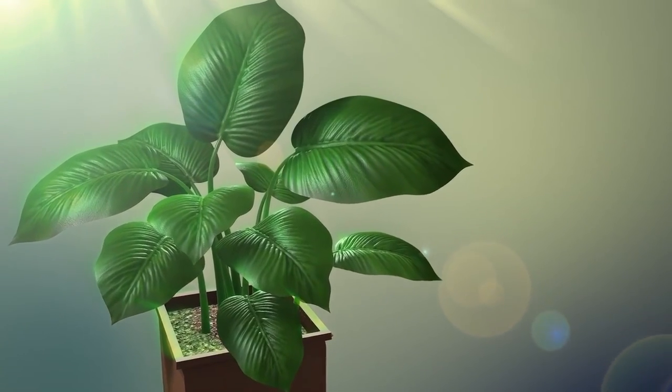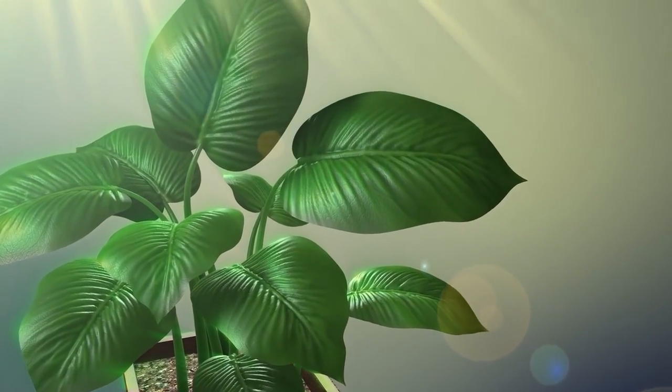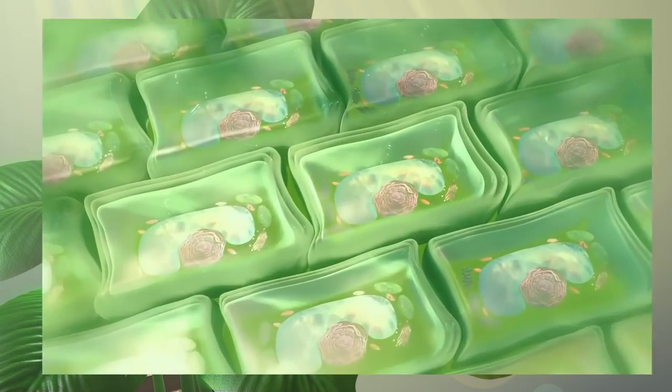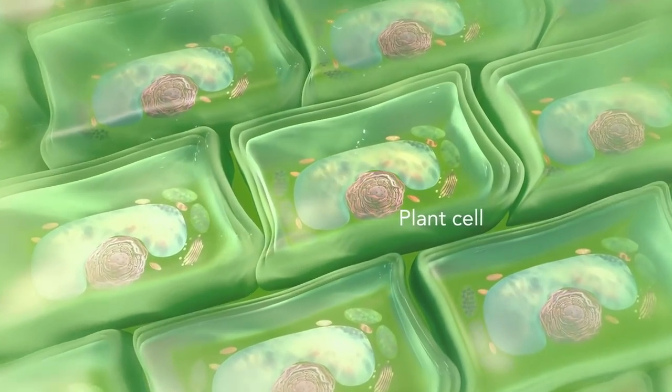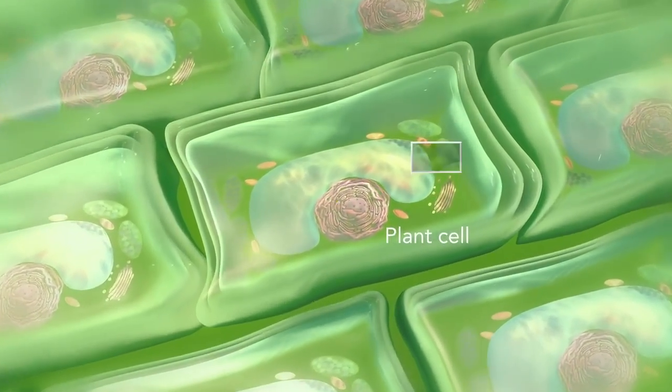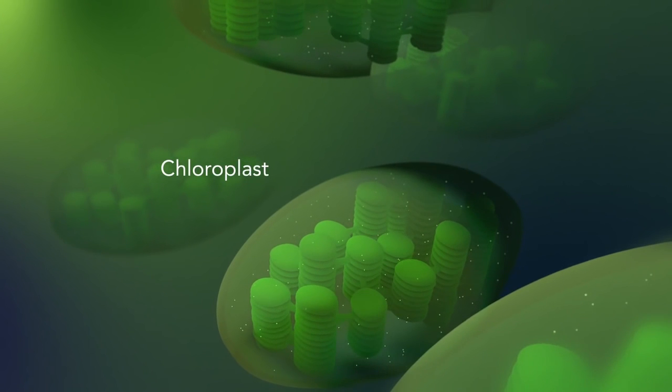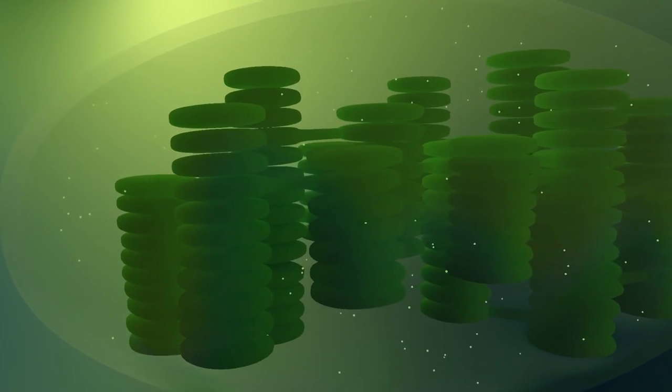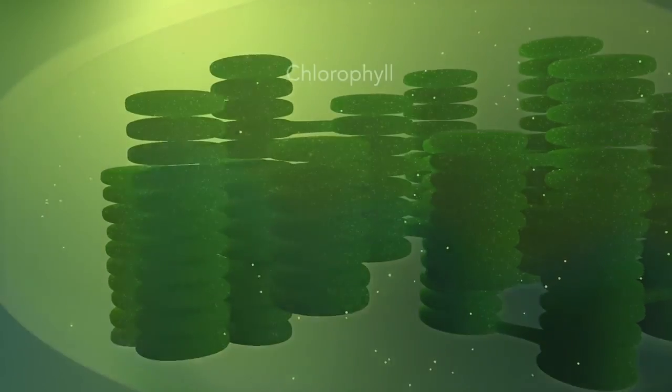Some organisms, such as plants that are photo-autotrophic, meaning they capture sunlight for energy, have cells with an organelle called a chloroplast. The chloroplast is where photosynthesis happens. It's green because it has a green pigment called chlorophyll.